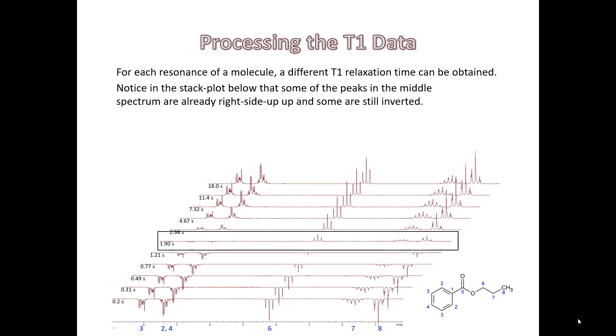If we look at the structure of this molecule, we'll see that this is propylbenzoate. And the different resonances are part of the benzene ring on the left and the alkyl group on the right. If we look at the T1 times, we notice that the T1s for the alkyl group are significantly smaller than the T1s for the benzene ring. This is to be expected a little bit because of the molecular motion.